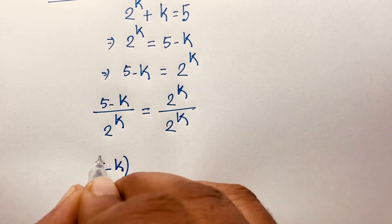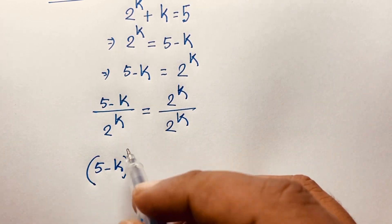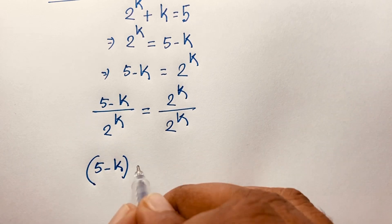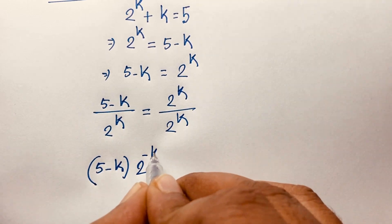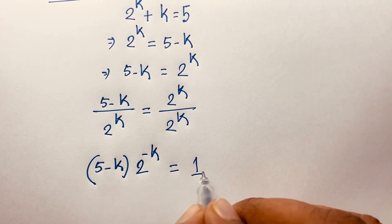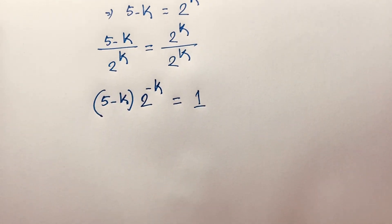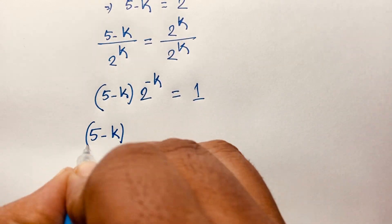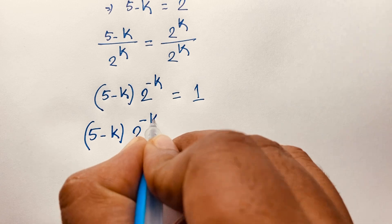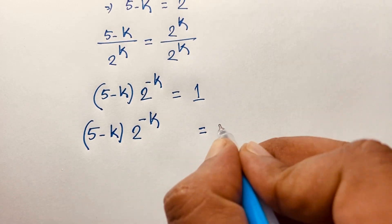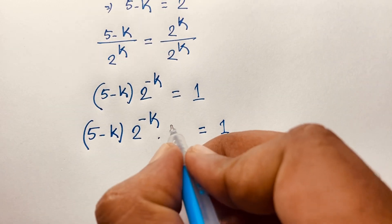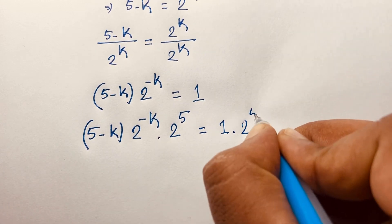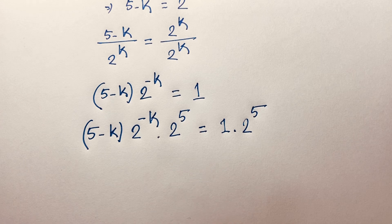Now I apply the law: 1 over a to the power n equals a to the power negative n. So 1 over 2 to the power k equals 2 to the power negative k. This division gives 1. So we have (5 minus k) times 2 to the power minus k equals 1. Now I multiply both sides by 2 to the power 5.